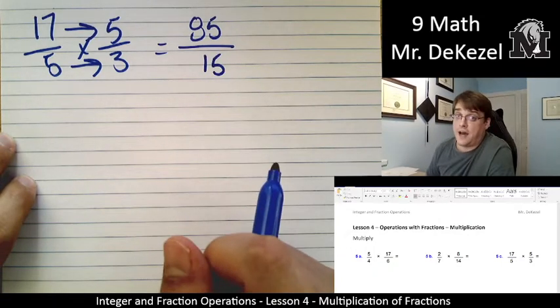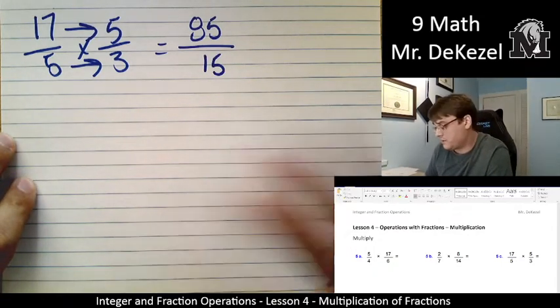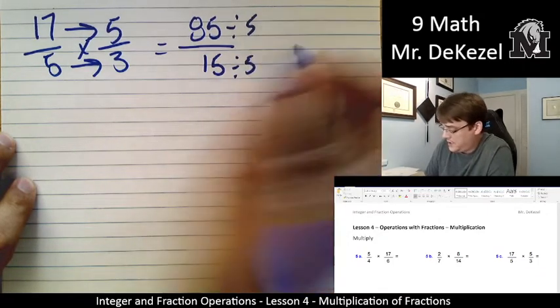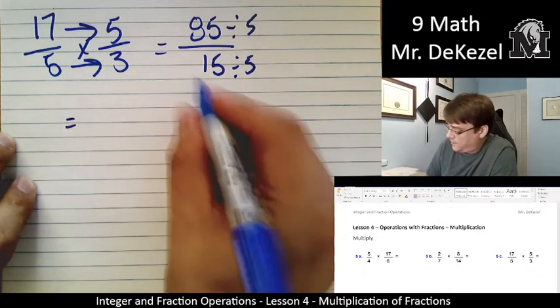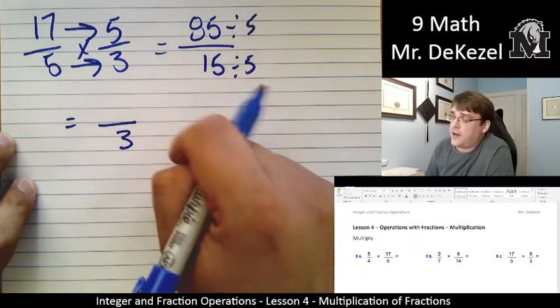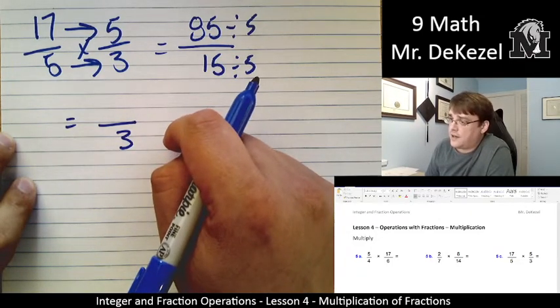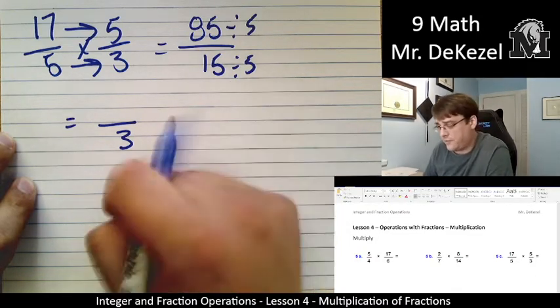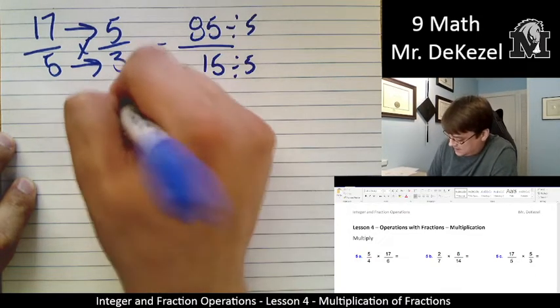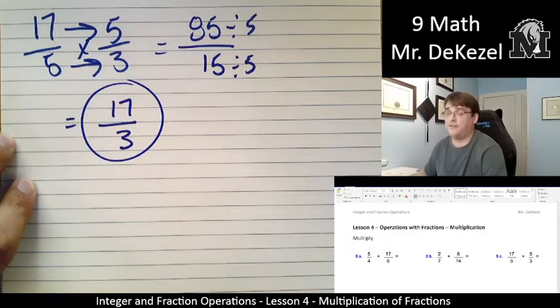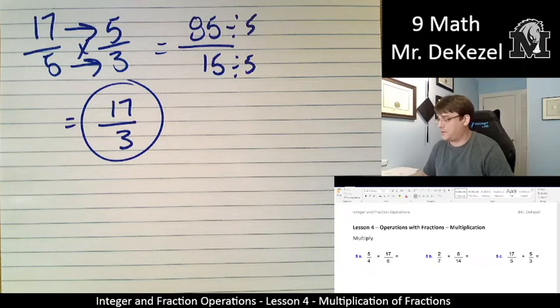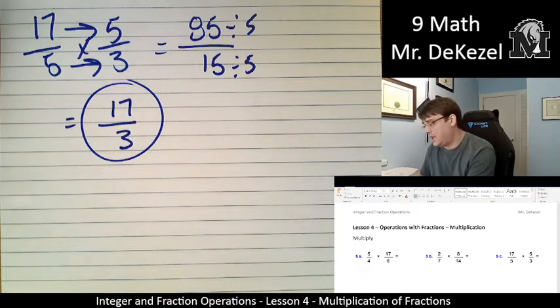These both end in 5, so our divisibility rules. I know that I can divide both of these by 5. The easy one first. 15 divided by 5 is 3. 85 divided by 5. So 50 divided by 5 is 10, so we are going to add 35 more. So that is 17 we have, and we cannot reduce that any further. 17 is a prime number. We cannot reduce any fraction with 17 in it any further.